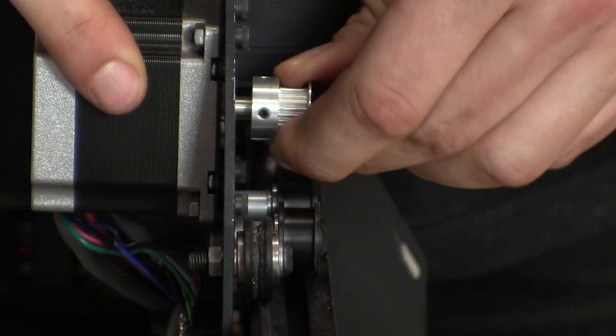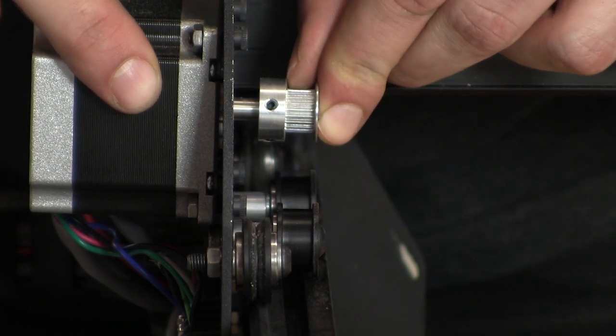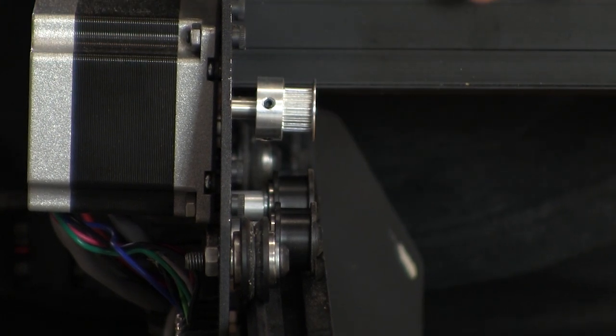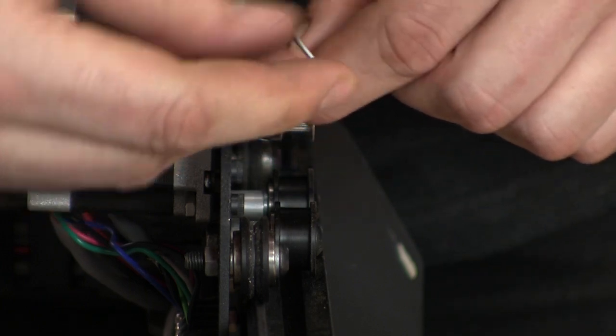Check the alignment of the Y-axis pulleys with the smooth idlers. If you need to, loosen the set screws and make sure that the end of the pulley lines up with the end of the smooth idlers, just like we did on the X-axis.